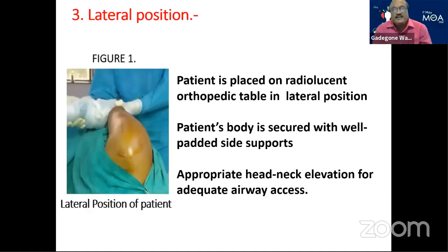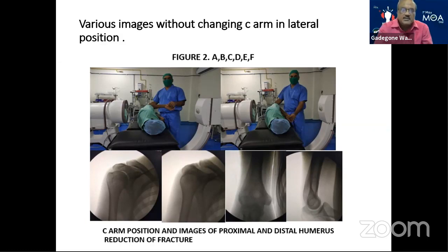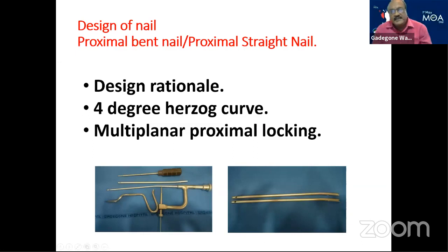I also propose a lateral position which is not much described in literature and textbooks. The patient is placed on a radiolucent orthopedic table in lateral position, secured with well-padded side supports, with appropriate head-neck elevation. By just rotating the forearm at the elbow you can see the olecranon fossa lateral picture as well as a good view of the greater tuberosity, lesser tuberosity, and sulcus. There are many nail designs available in the market: 4-degree Herzog curve, multi-planar proximal locking systems with proximal straight nails and proximal bent nails. Newer designs are also available for minimal invasive surgery with proximal and distal perfect locking as seen in femur and tibia nails.